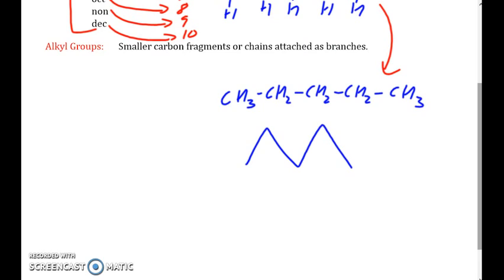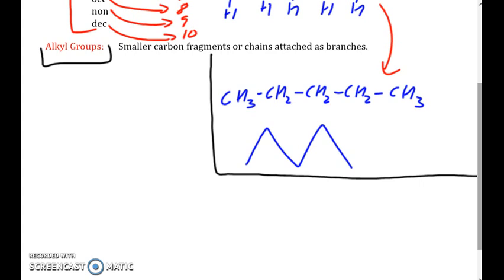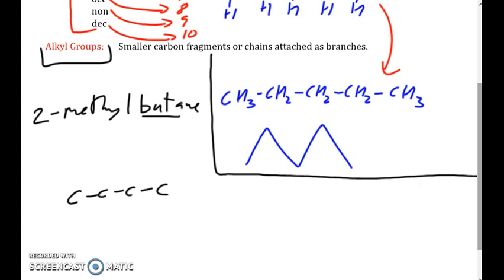Naming is going to get a little bit more complicated than this, so I want to talk about alkyl groups — these are basically carbon subgroups off of our main chain. For example, if I wanted to have 2-methylbutane, how would I draw that out? Well, butane we know is going to be four carbons. The -ane ending implies all single bonds, so we know we've done it correctly. Now, this part where it says 2-methyl means that at the second carbon, we are going to have to draw a methyl group. And what is a methyl group? It's CH3.